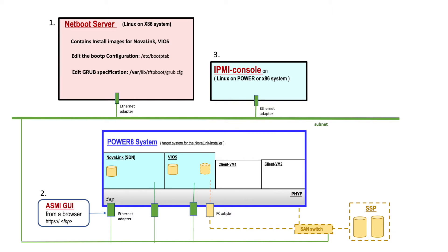This figure gives an overview of the setup. First, there's a netboot server which contains the install images and a couple of files you have to edit. Secondly, there's an ASMI GUI launched from a browser. Thirdly, there's an IPMI console through which you enter the configuration details. At the end, the Power8 system will be set up.